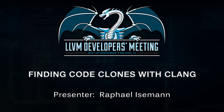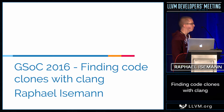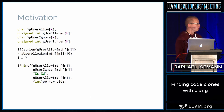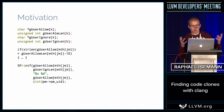This is a quick recap of what I did in this Google Summer of Code, where I worked on a project finding code clones with Clang. I want to start with a short motivation slide for why we're doing it and what we tried to achieve with the project.